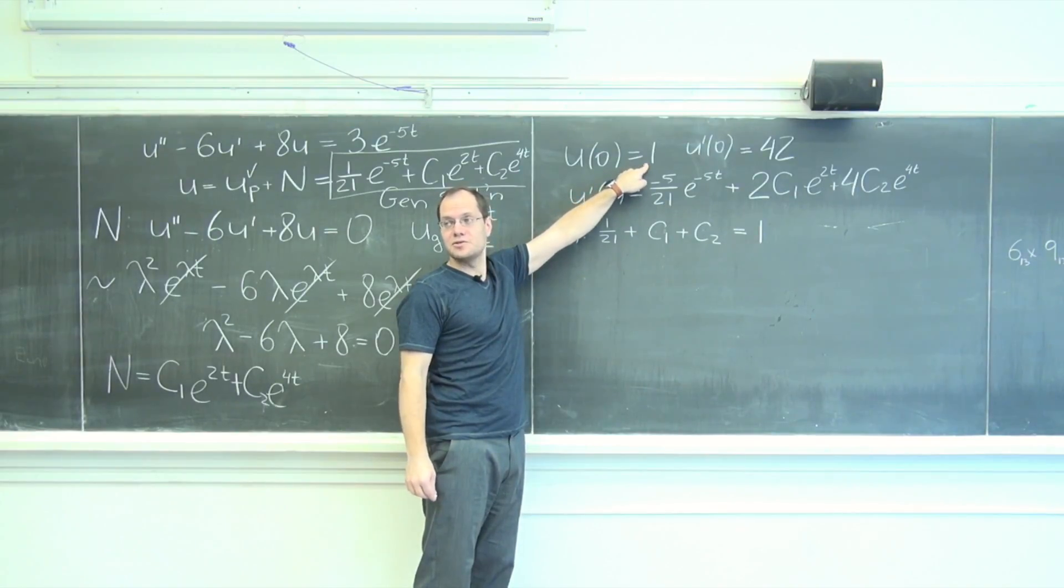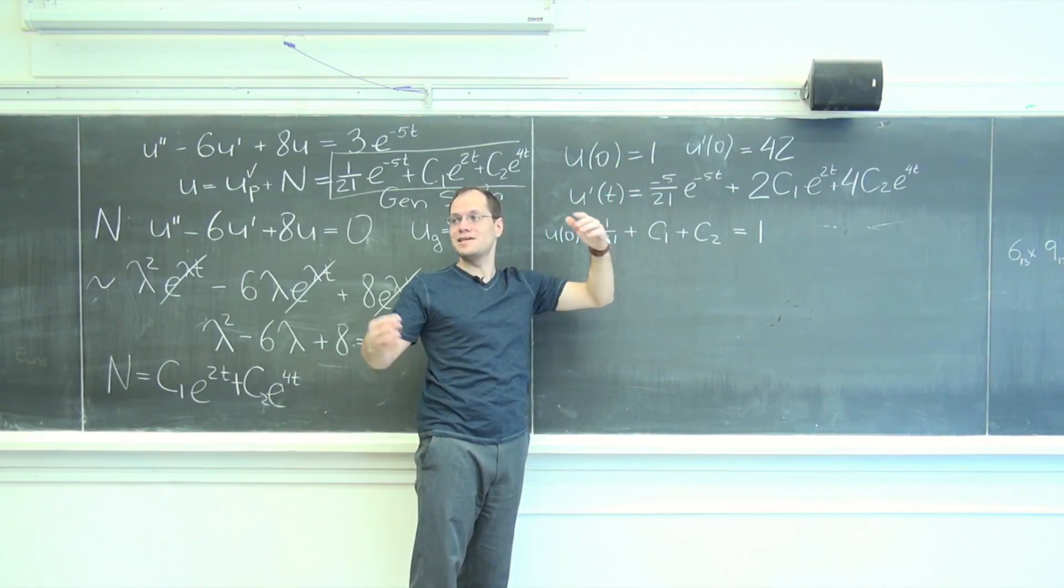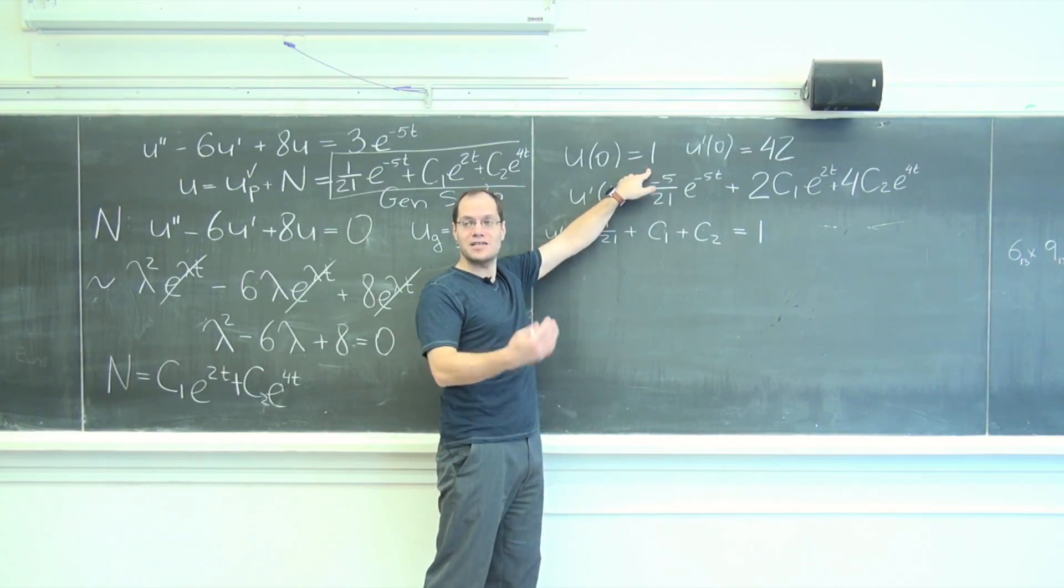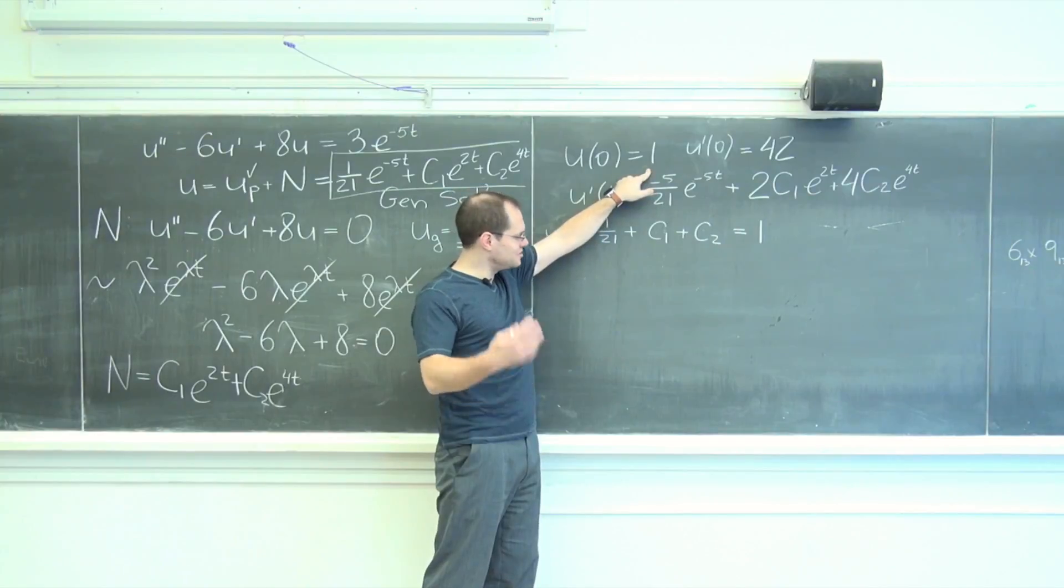Because that's what u of zero is, and when I take u of t and plug in zero, whatever I get should match the given initial condition, which should match what we know u zero was given to be.